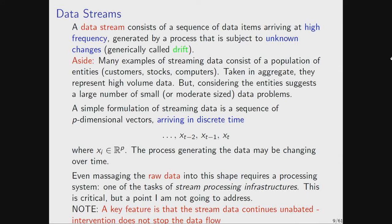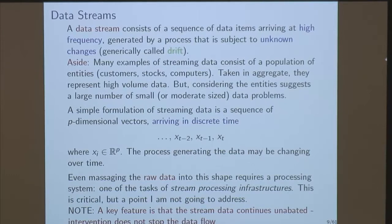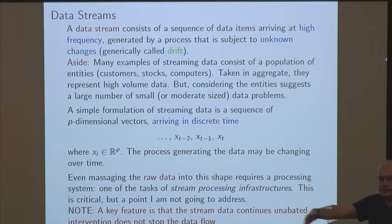I'm very interested in change point detection. Imagine a process moves along, being generated by an IID process. At some point the mean changes, the variance changes, the distribution changes, and I want to detect when that happens. That's a very classical problem in statistics with a long history. I'm going to reduce everything down to a sequence of vectors and treat them as discrete time — x1, x2 — not thinking about inter-arrival times. This is just because the methodology I'm going to introduce requires that.